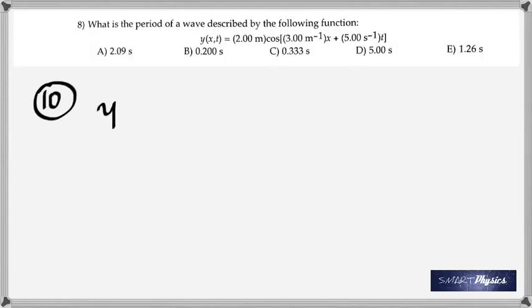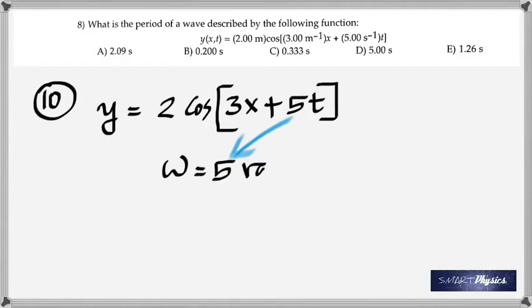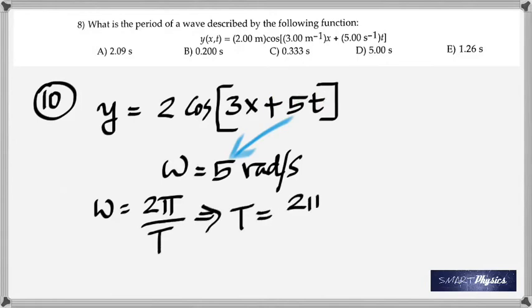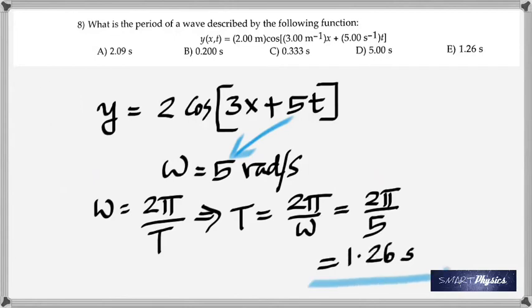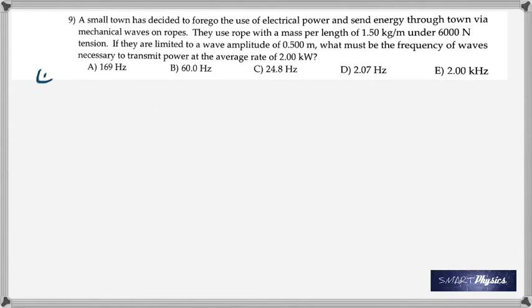That brings us to the eighth one. What's the period of a wave described by this function? Similar to something we've done before. That's the equation given: 2 cos 3x plus 5T. And now you know omega is 5, because that's kx plus omega T. And if omega is 5, and you know T is 2 pi by omega, like in the last question, it's 2 pi divided by 5, 1.26 seconds. Just like the last one, same answer now.